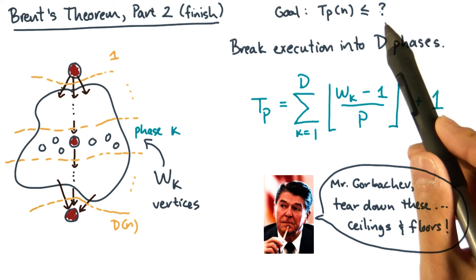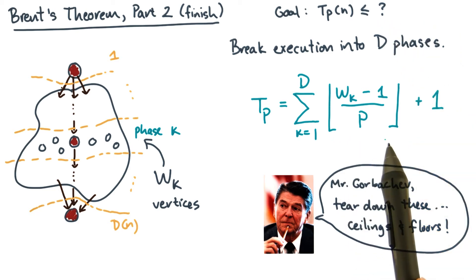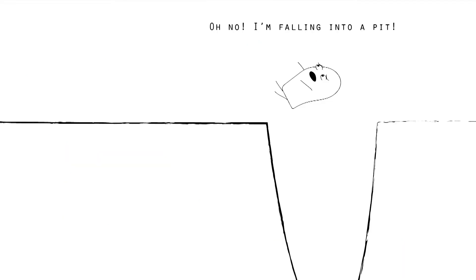Remember, our original question was to get an upper bound. So can we get an upper bound on the sum? Now the floor of something is always less than or equal to that something. That gives an upper bound and eliminates the floor. Oh no, I'm falling into a pit.